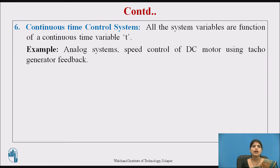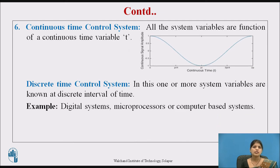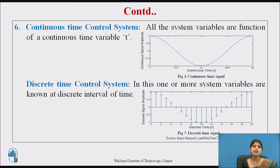Next are continuous-time and discrete-time systems. Continuous-time means all the system variables are functions of a continuous time variable t — an example is an analog system. Discrete-time means one or more system variables are known only at discrete intervals of time — for example, a digital system. This is a continuous-time signal and this is a discrete-time signal.